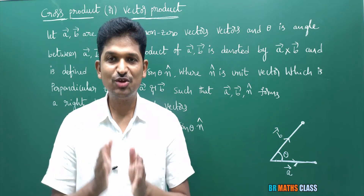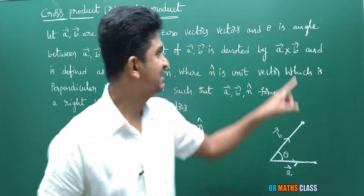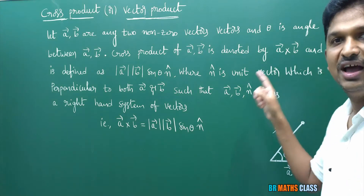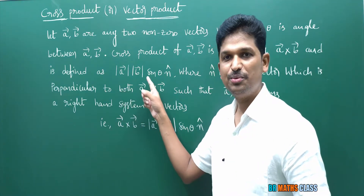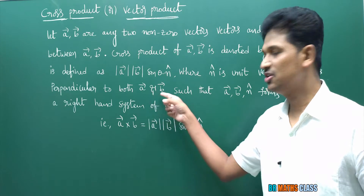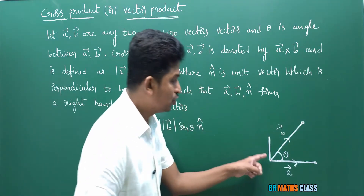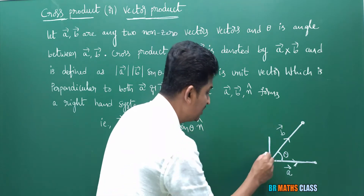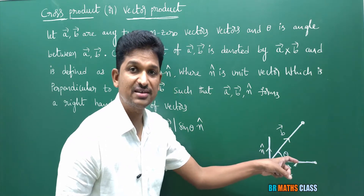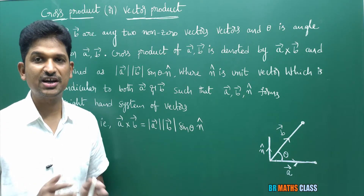Once again, quickly recalling the definition: a̅, b̅ are any two non-zero vectors, theta is the angle between them. Then a̅ cross b̅ is defined as magnitude of a̅ into magnitude of b̅ into sine theta into n̂, where n̂ is a unit vector perpendicular to both a̅ and b̅, such that a̅, b̅, n̂ forms a right-hand system of vectors.